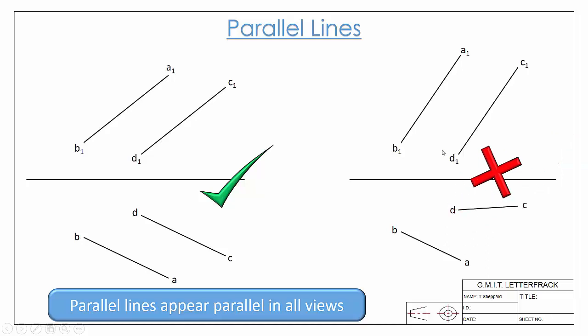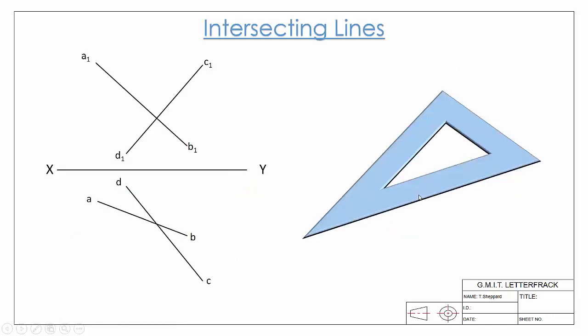The next example we're going to take is intersecting lines. Intersecting lines are simply lines that touch or cross each other. The example we have here is our set square - if we take the edges of our set square...